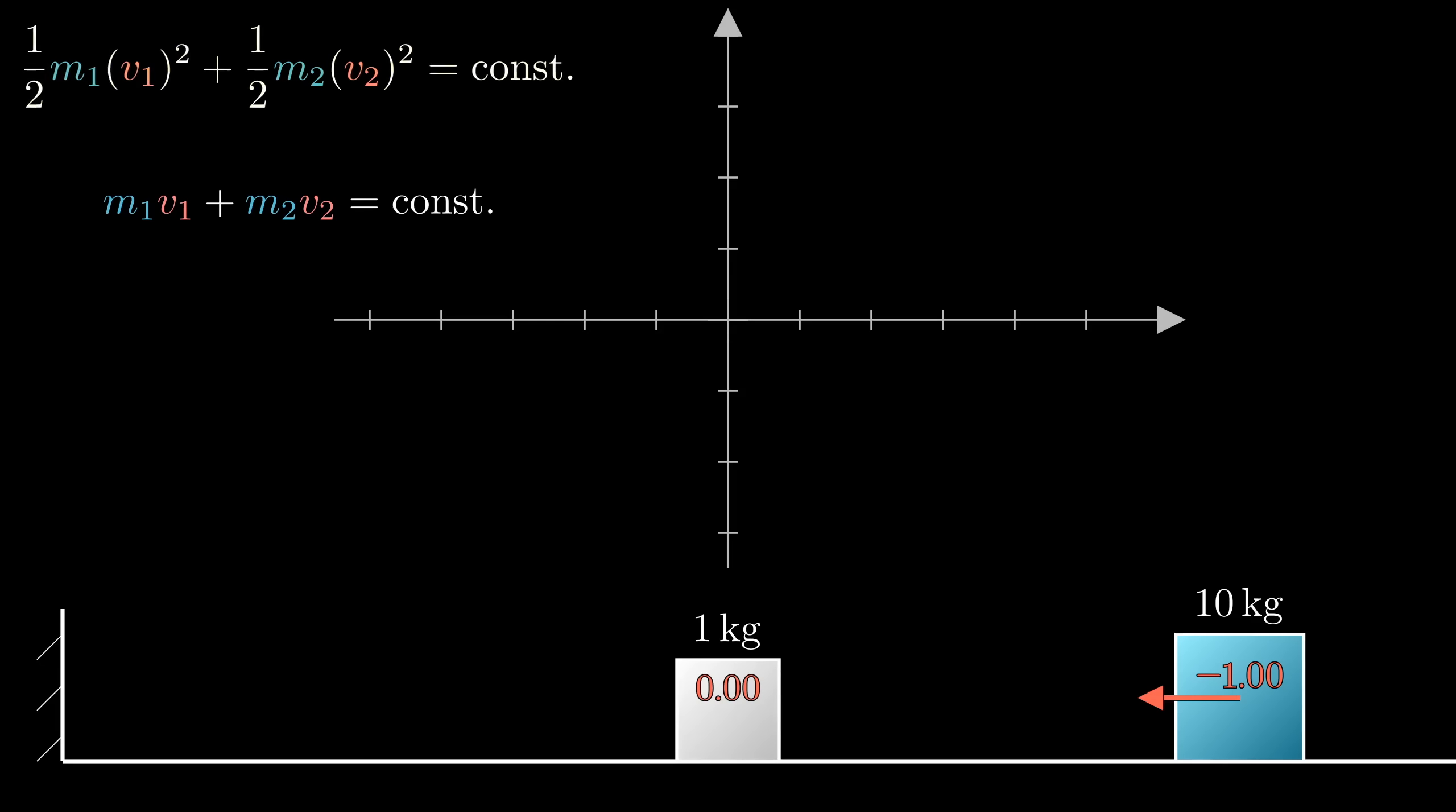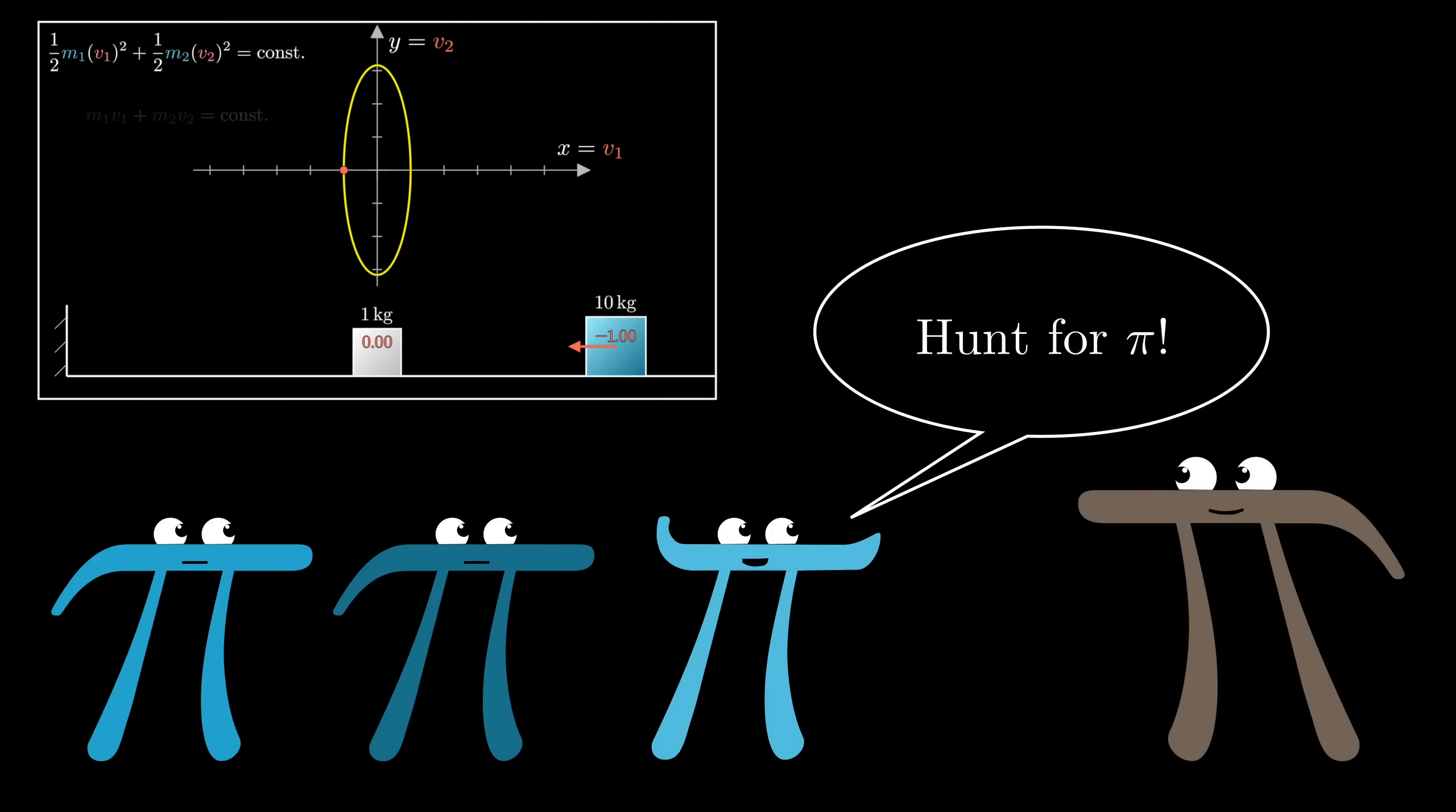You might start by focusing on the energy equation. Since v1 and v2 are changing, maybe you think to represent the equation on a coordinate plane where x equals v1 and y equals v2. So individual points on this plane encode the pair of velocities of our block. In that case, the energy equation represents an ellipse, where each point of this ellipse gives you a pair of velocities, all of which correspond to the same total kinetic energy. In fact, let's actually change our coordinates a little bit to make this into a perfect circle, since we know that we're on a hunt for pi.